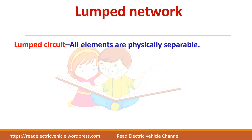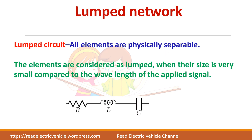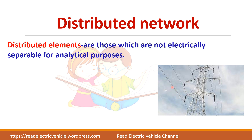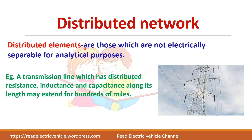Next is lumped and distributed networks. If all the elements are physically separate — meaning you are able to separate the elements physically — they are called lumped circuits. Examples include resistor, inductor, and capacitor. In a transmission line, however, there are numerous resistors, inductors, and capacitors distributed throughout the line, and you cannot electrically separate them for analytical purposes. In that case it is called a distributed element.